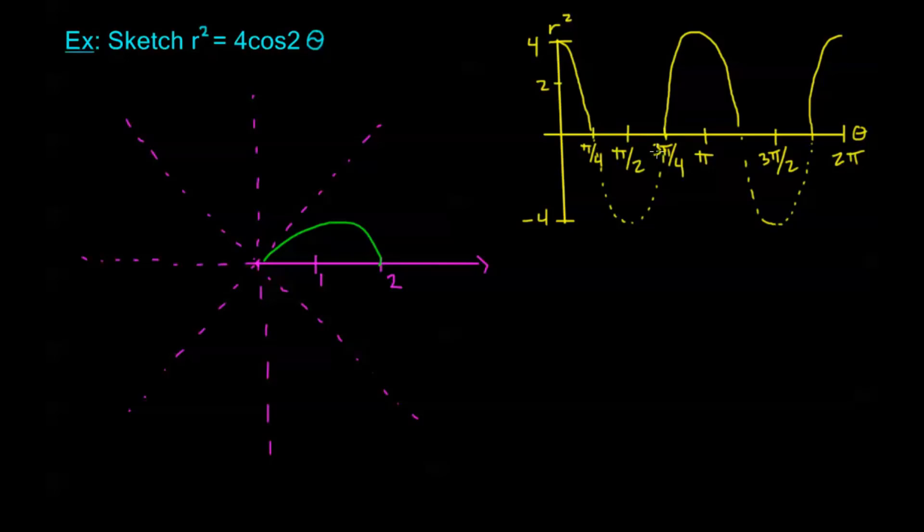From π/4 to 3π/4, we have nothing. In this area right here, we're empty. And π/2 to 3π/4, we're also empty. So this whole area, this is where I don't have anything to graph.